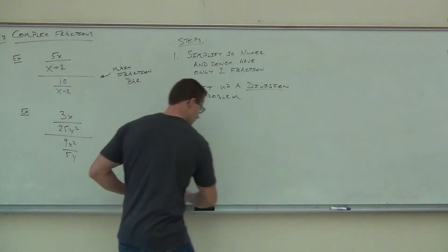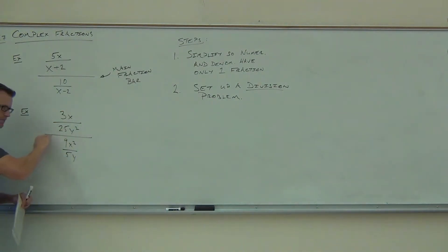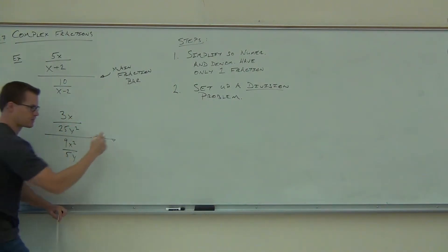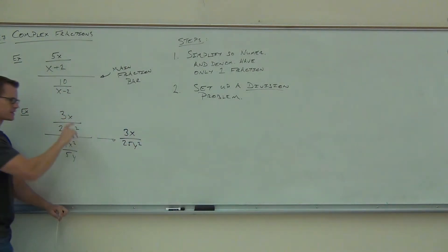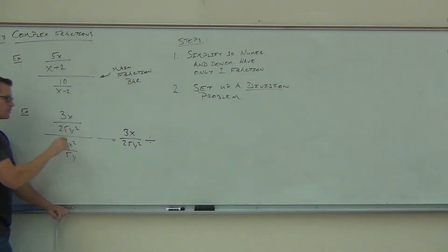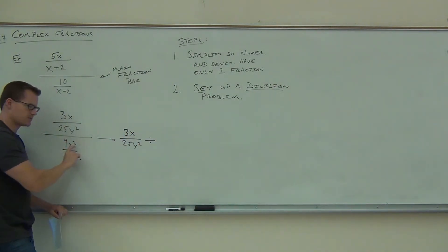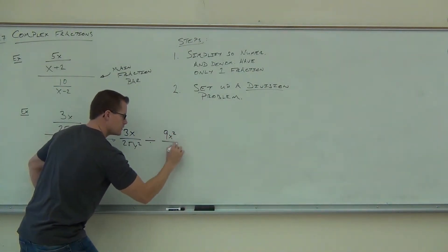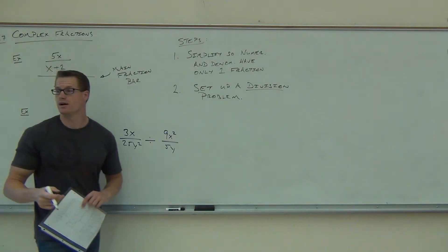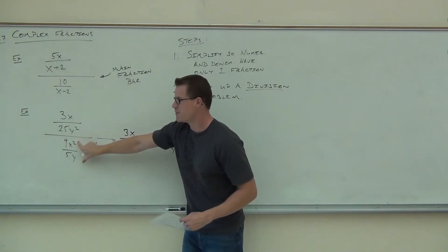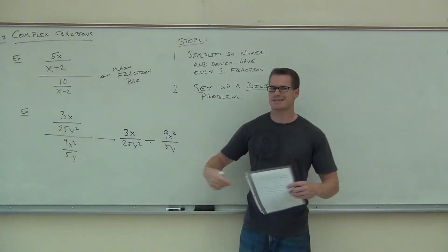Let's try that. We notice we have one fraction over one fraction, and this main fraction bar means division. So instead of writing it as a complex fraction, I'm going to write 3x over 25y² — that's my main numerator — divided by 9x² over 5y. We're not flipping anything around yet. We have 3x over 25y² divided by 9x² over 5y. This is main numerator divided by main denominator — it says exactly the same thing mathematically.